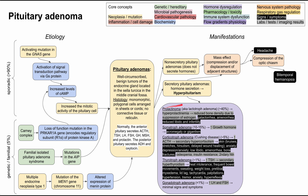If a prolactin-producing cell increases its mitotic activity and becomes an adenoma, you have a prolactinoma, also called a lactotroph adenoma — the most common kind of pituitary adenoma. You'll see hyperprolactinemia on a blood test, and reduced bone density due to suppression of estrogen. Other signs and symptoms include galactorrhea, amenorrhea, and reduced libido and infertility. In men, the only symptoms are often reduced libido and infertility.